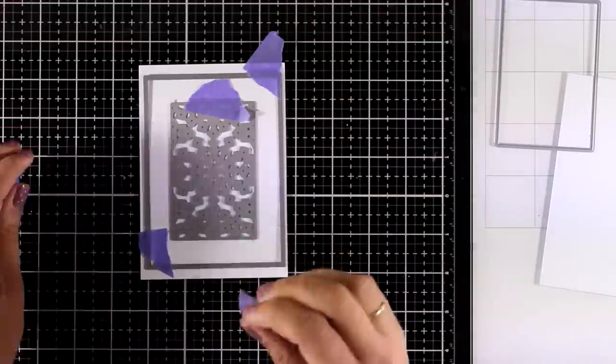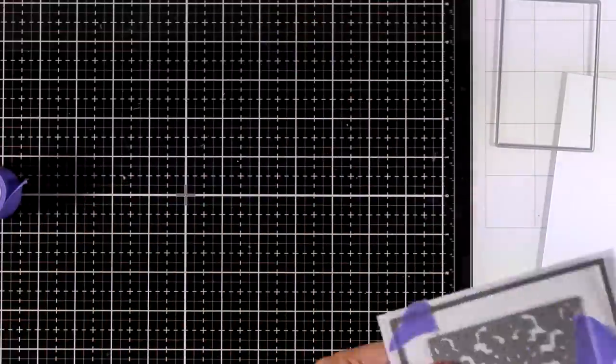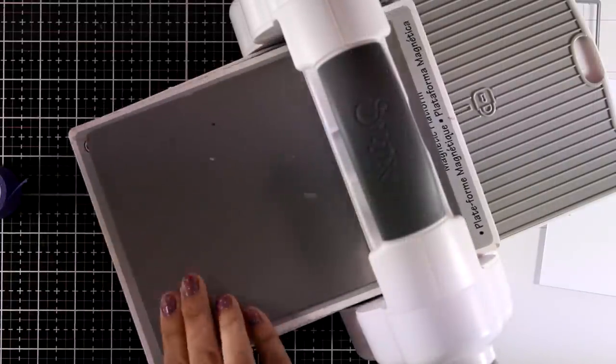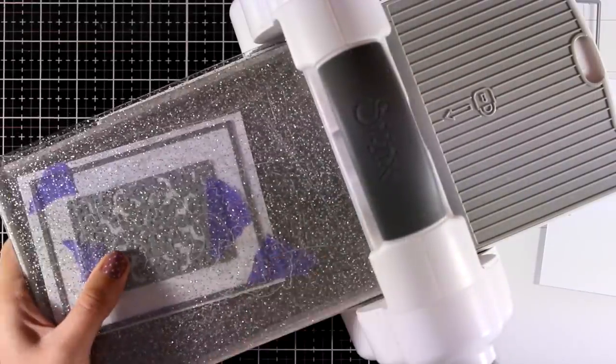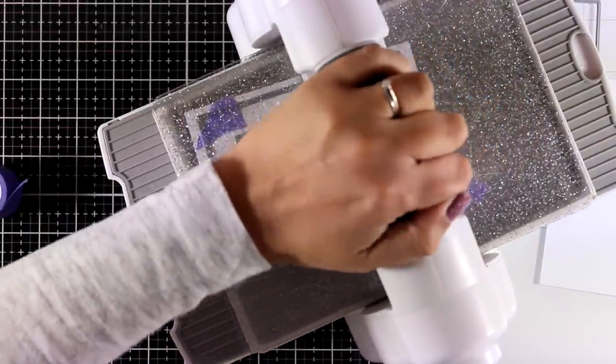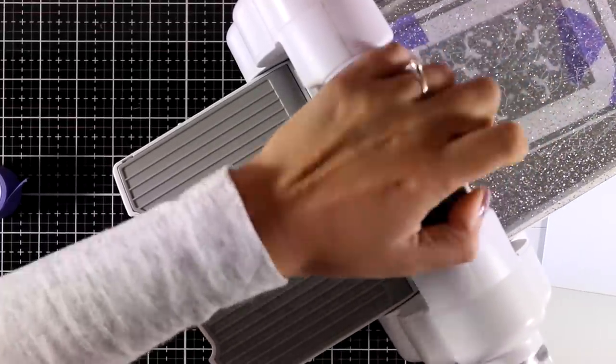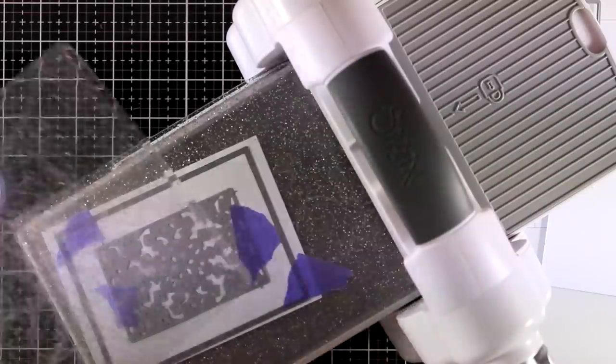So I am going to place one inside the other and I am going to cut out a panel out of this white cardstock. I am running it through my Big Shot machine and just because this design is very intricate it is a great idea to use that metal shim.